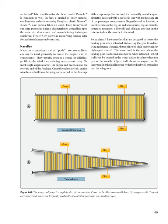Nacelles, sometimes called pods, are streamlined enclosures used primarily to house the engine and its components. They usually present a round or elliptical profile to the wind, thus reducing aerodynamic drag. On most single-engine aircraft, the engine and nacelle are at the forward end of the fuselage. On multi-engine aircraft, engine nacelles are built into the wings or attached to the fuselage at the empennage tail section. Occasionally, a multi-engine aircraft is designed with a nacelle in line with the fuselage aft of the passenger compartment. Regardless of its location, a nacelle contains the engine and accessories, engine mounts, structural members, a firewall, and skin and cowling on the exterior. Some aircraft have nacelles that are designed to house the landing gear when retracted.